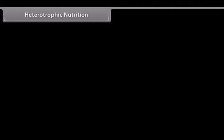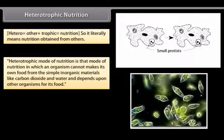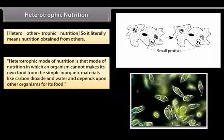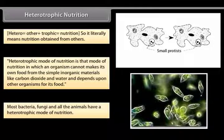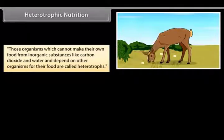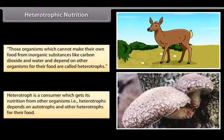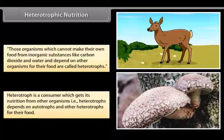Heterotrophic mode of nutrition is that mode in which an organism cannot make its own food from simple inorganic materials like carbon dioxide and water and depends upon other organisms for its food. Most bacteria, fungi, and all animals have a heterotrophic mode of nutrition. Those organisms which cannot make their own food from inorganic substances are called heterotrophs. A heterotroph is a consumer which gets its nutrition from other organisms, that is, heterotrophs depend on autotrophs and other heterotrophs for their food.